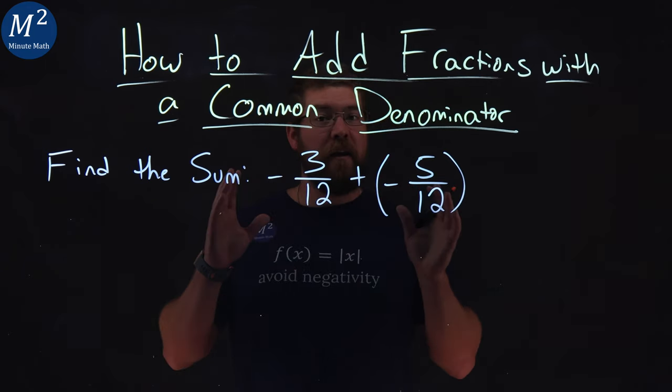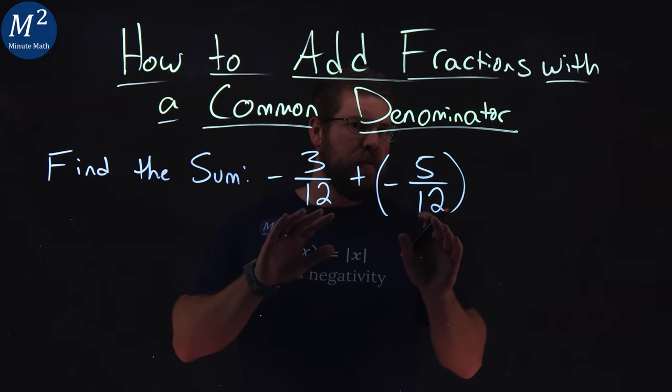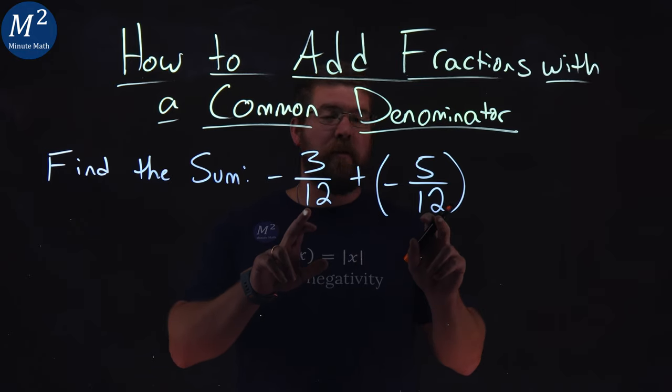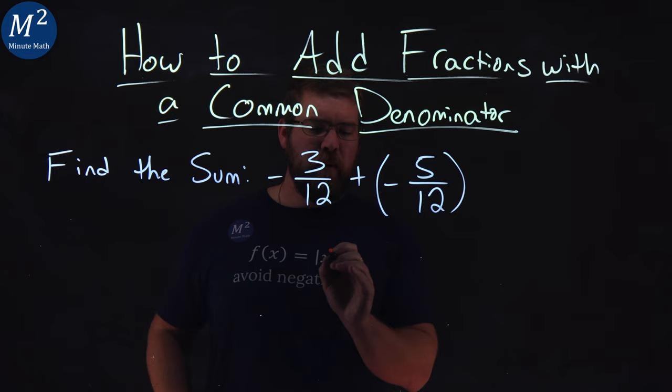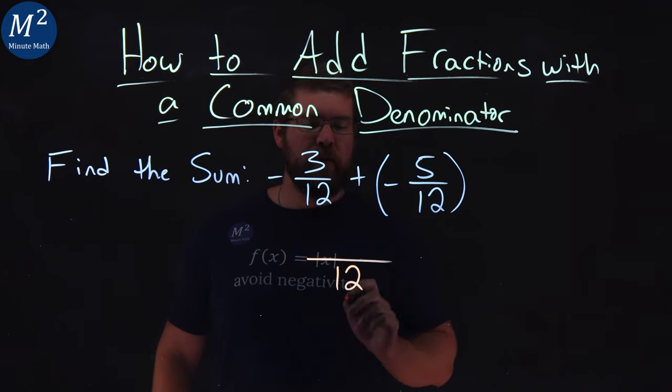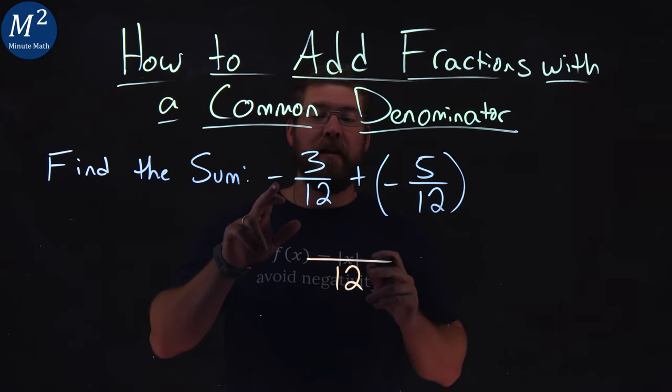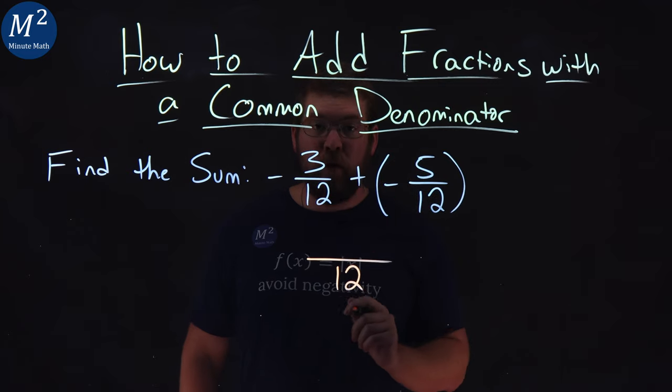Well, we know we can add fractions when they have a common denominator, and we basically have that. We have a 12 in both of our denominators, and we can write it as a positive 12. What I'm going to do is apply the negative sign to each of the numerators.